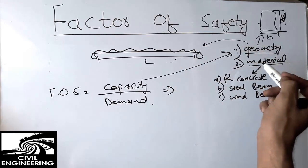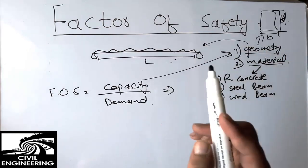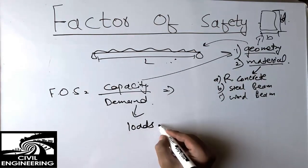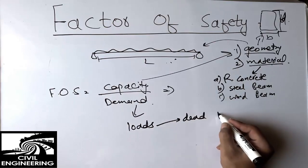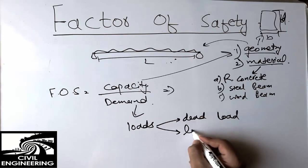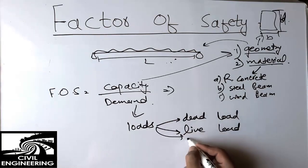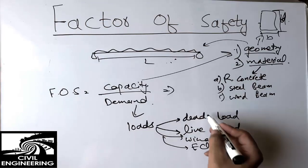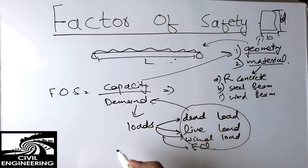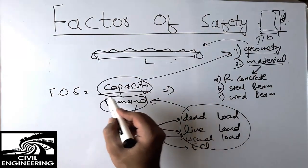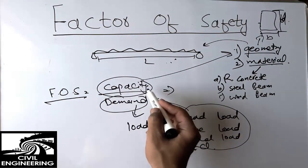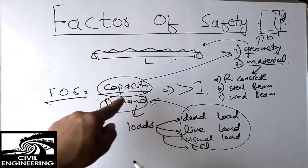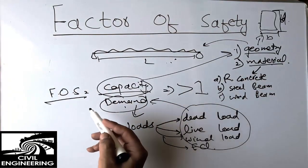The demand totally depends on the loads coming on the beam. It may be the dead load of the beam itself, the live load coming on the beam, the wind load, or earthquake load. We take all these load considerations as the demand. Dividing capacity by demand gives us the factor of safety, which should always be greater than one, meaning your capacity must exceed the demand.